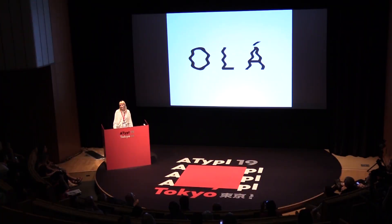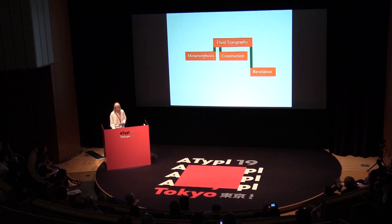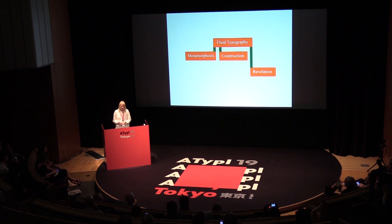Local kineticism Barbara Brownie divided into fluid typography and elastic typography. Elastic typography has movement in the letters' outlines, however the letter never breaks, so it always stays legible and readable. Fluid typography is the most complex category of kinetic typography, as it is constructed in time.